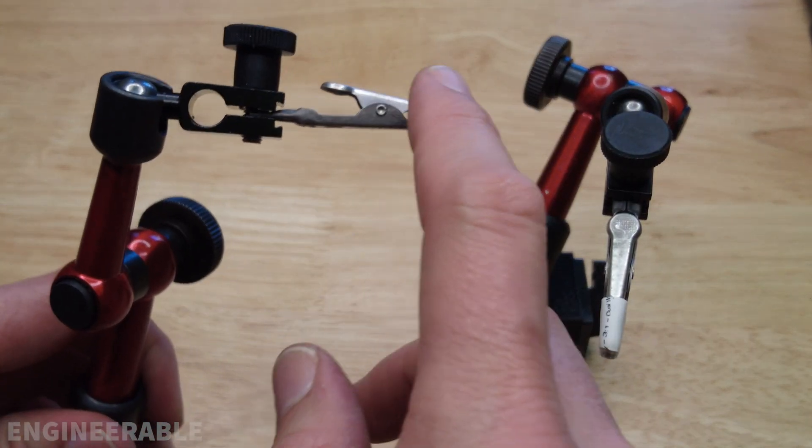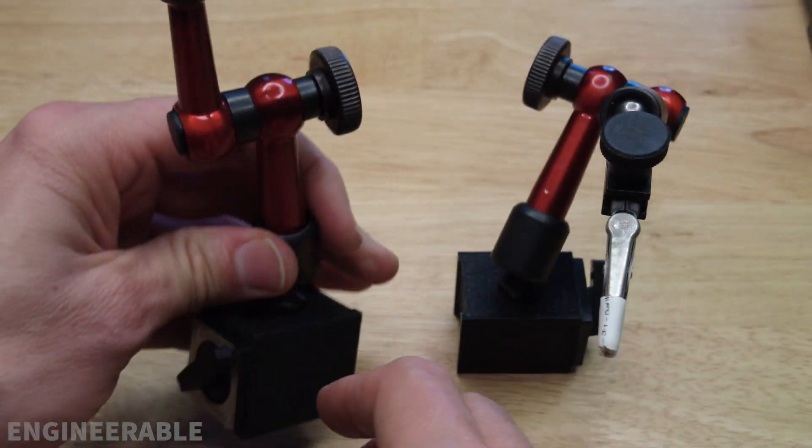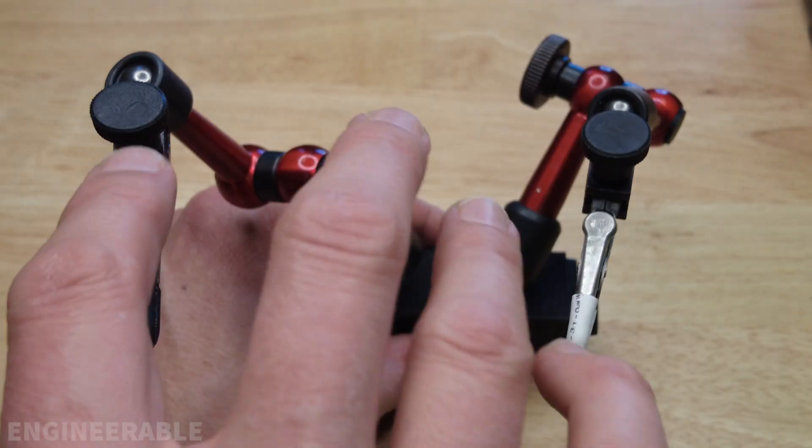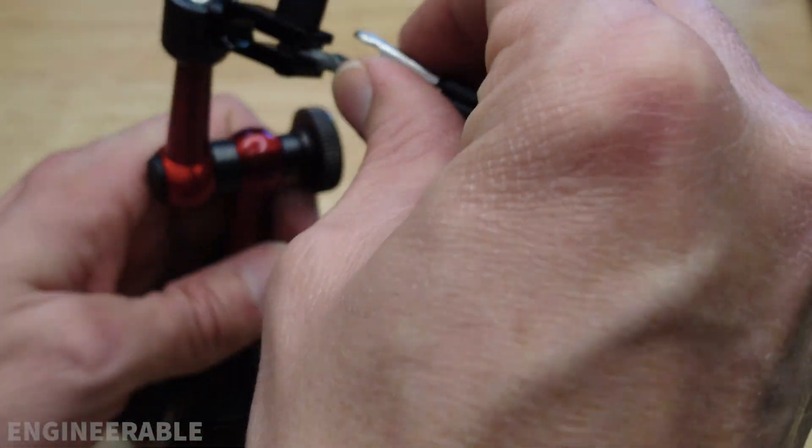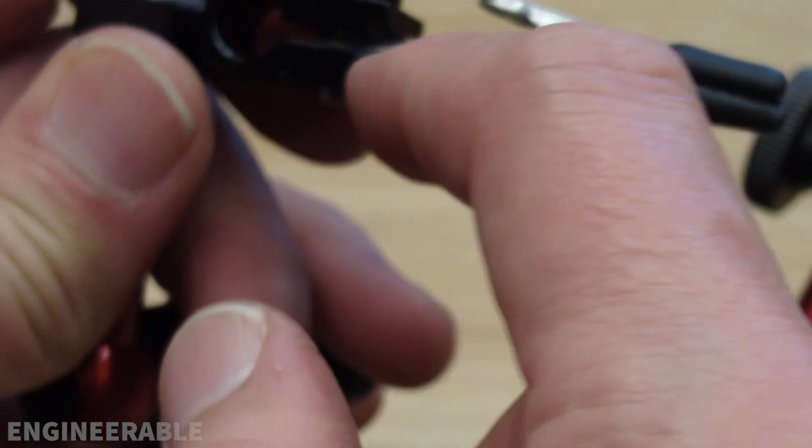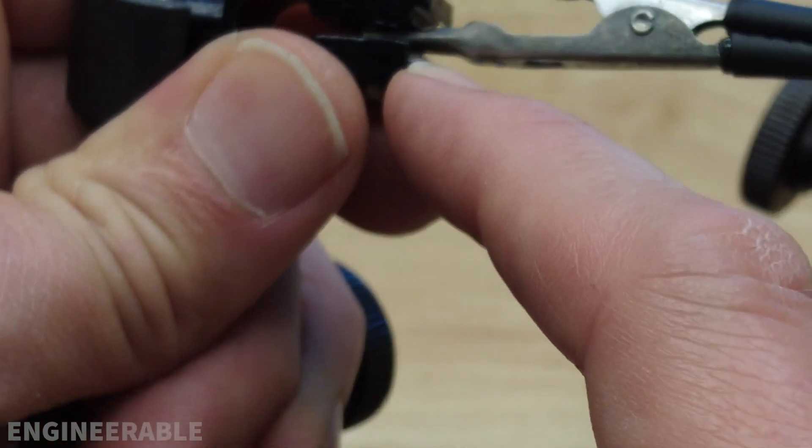Now that was probably the simplest way possible to add alligator clips to these dial indicator mini test stands. There are many other ways you could do this, including 3D printing some adapters either for this hole here or for the dial indicator dovetail here.